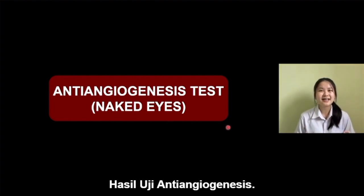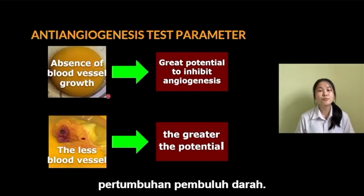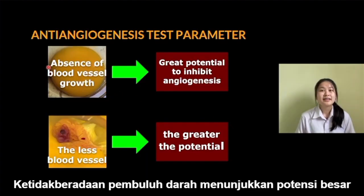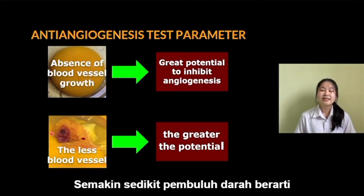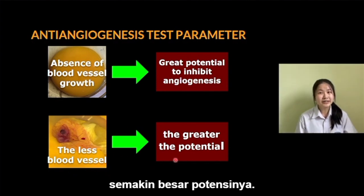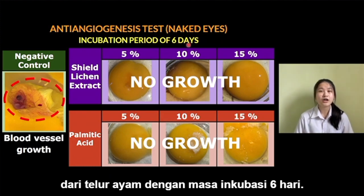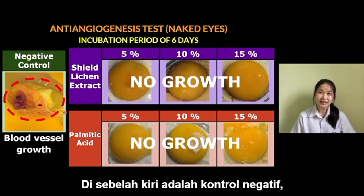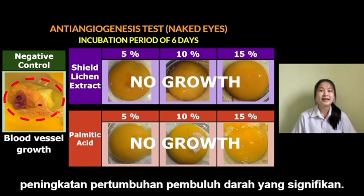And here's the most important part of our research: the anti-angiogenesis test results. The anti-angiogenesis potential is determined by the growth of blood vessels. The absence of blood vessel growth indicates a great potential as an angiogenesis inhibitor. These tables exhibit the observation results of chicken eggs within an incubation period of 6 days. On the left is the negative control, which shows obvious signs of embryo growth and significant increase in blood vessel growth.